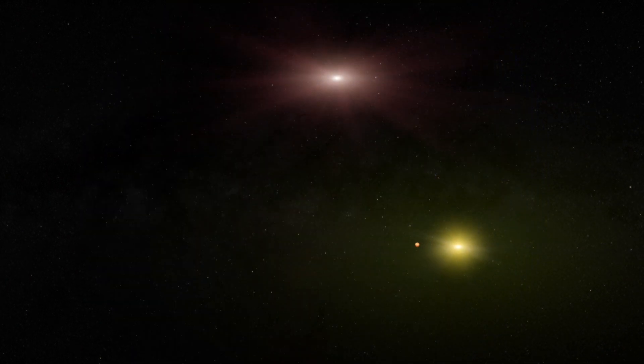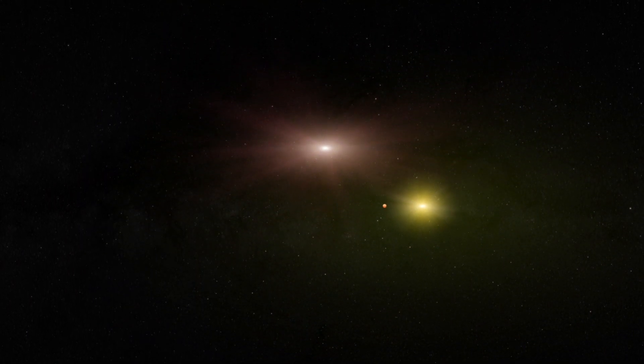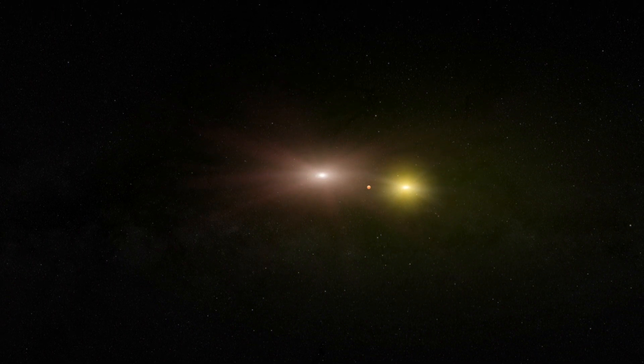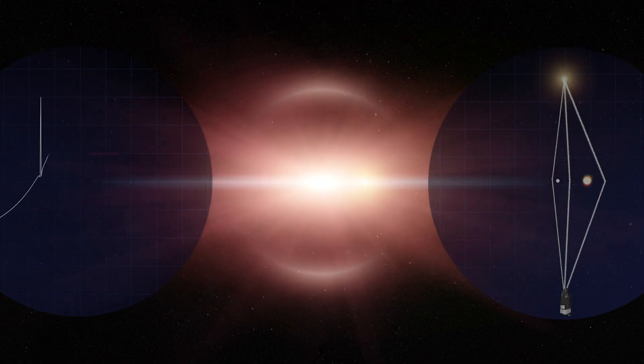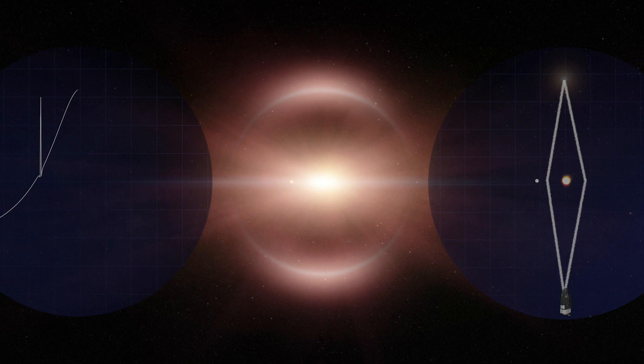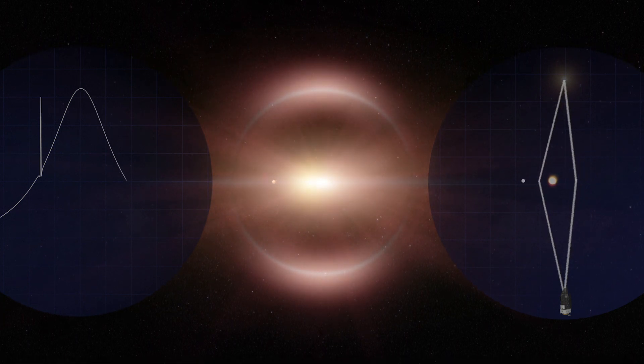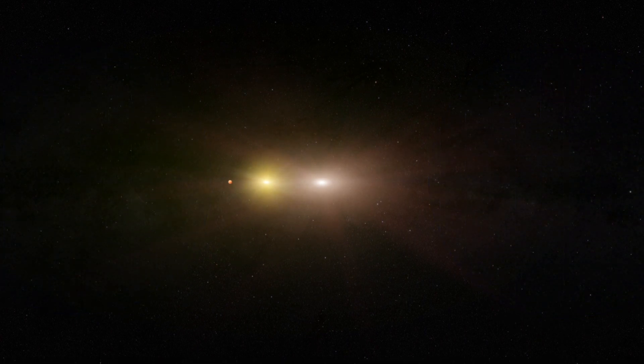When a star passes directly between us and a more distant star, its gravity can act like a lens, magnifying the background star's brightness significantly for a few weeks. If the lensing star hosts a planet, the planet's gravity can produce a noticeable change in brightness over a few hours or days. This spike signals not only the planet's presence, but tells us its mass and distance from the star.